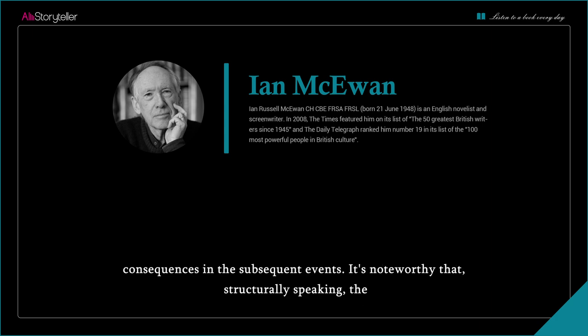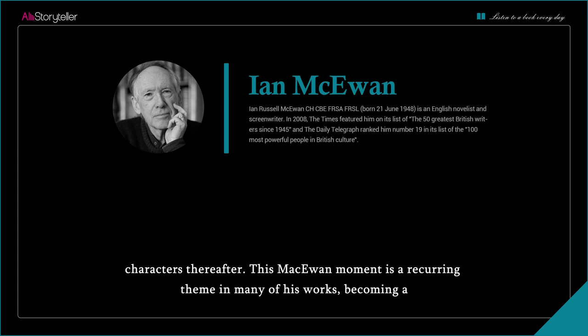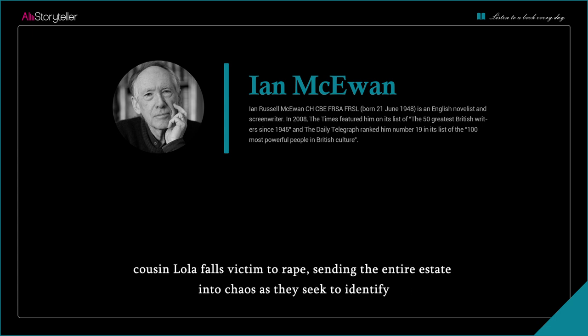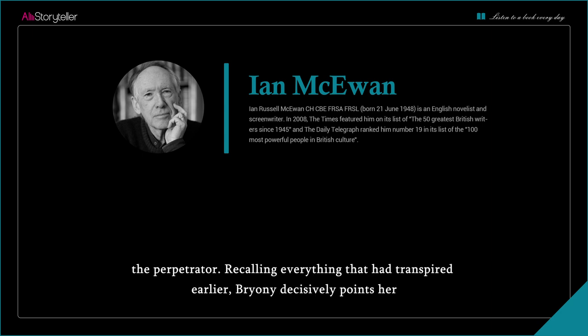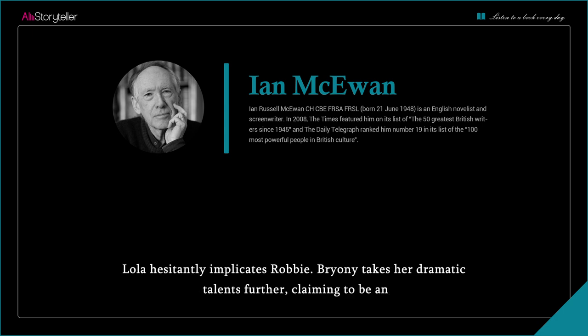Structurally speaking, the events that unfolded in the library became a focal point, dramatically altering the fates of all the characters thereafter. This 'McEwan moment' is a recurring theme in many of his works, becoming a signature characteristic. That evening, under the cover of a moonless and windy night, Bryony's cousin Lola falls victim to rape, sending the entire estate into chaos as they seek to identify the perpetrator. Recalling everything that had transpired earlier, Bryony decisively points her finger at Robbie, labeling him as the sex maniac she imagines him to be. Under her persuasion, Lola hesitantly implicates Robbie.